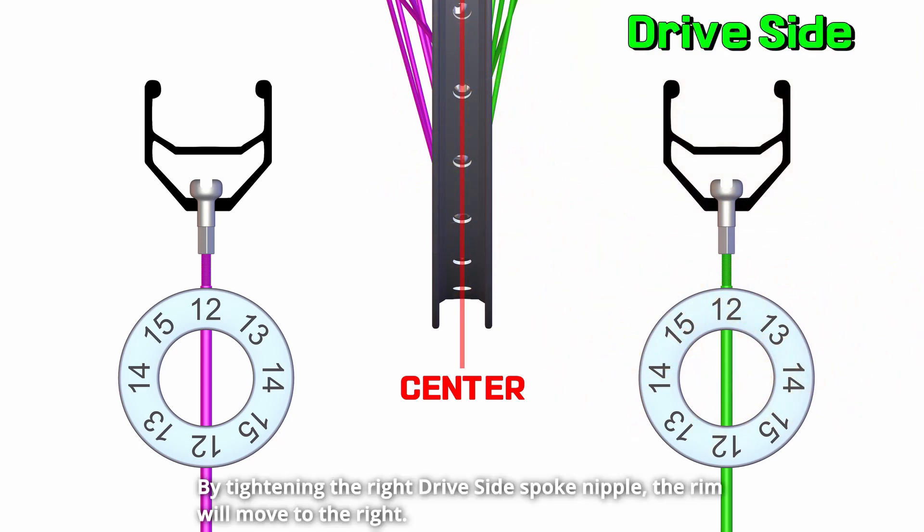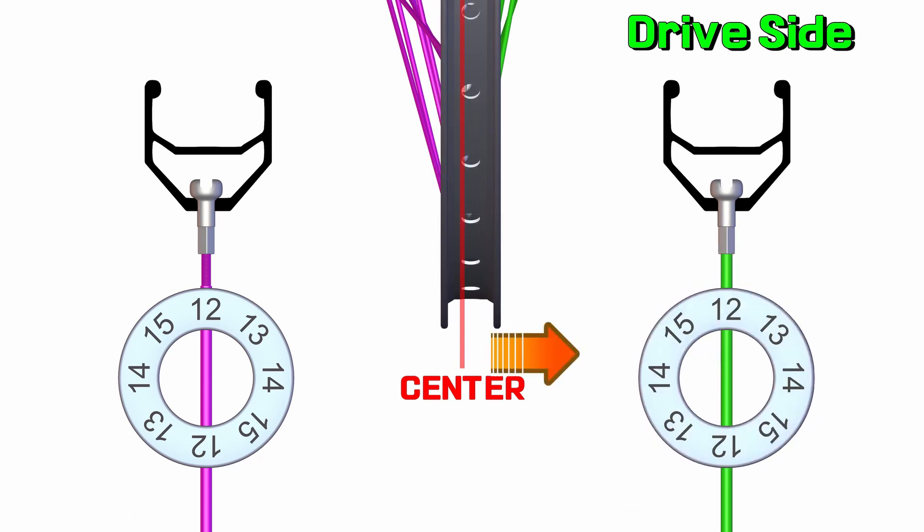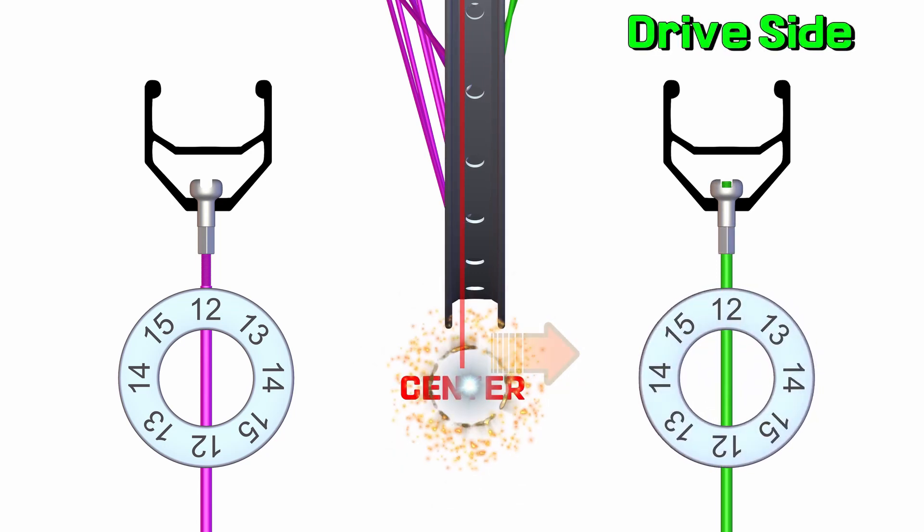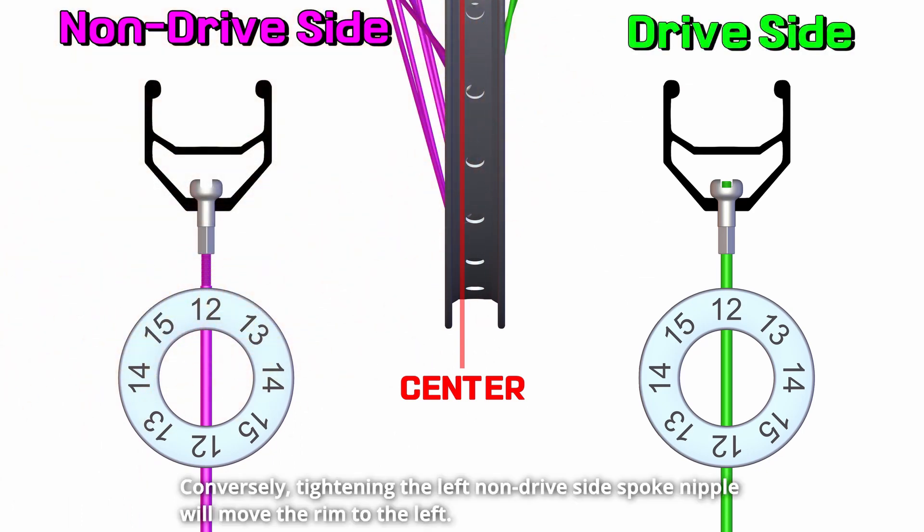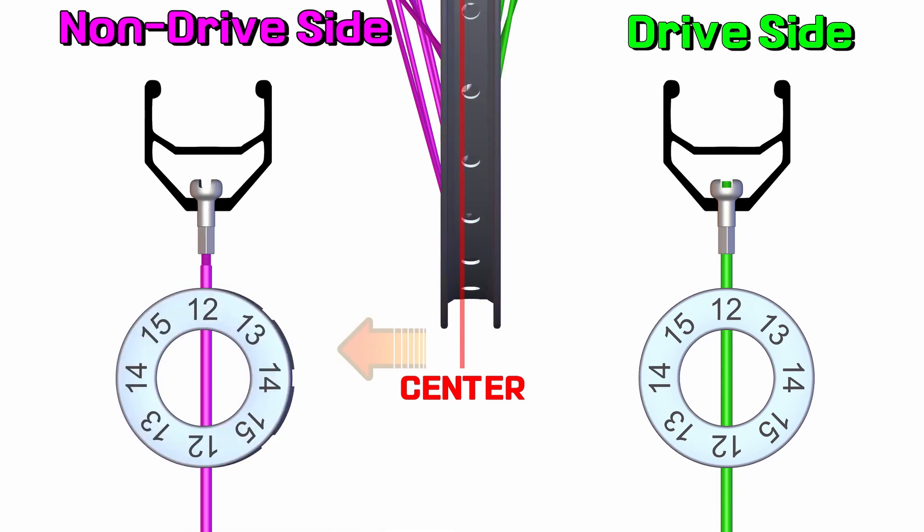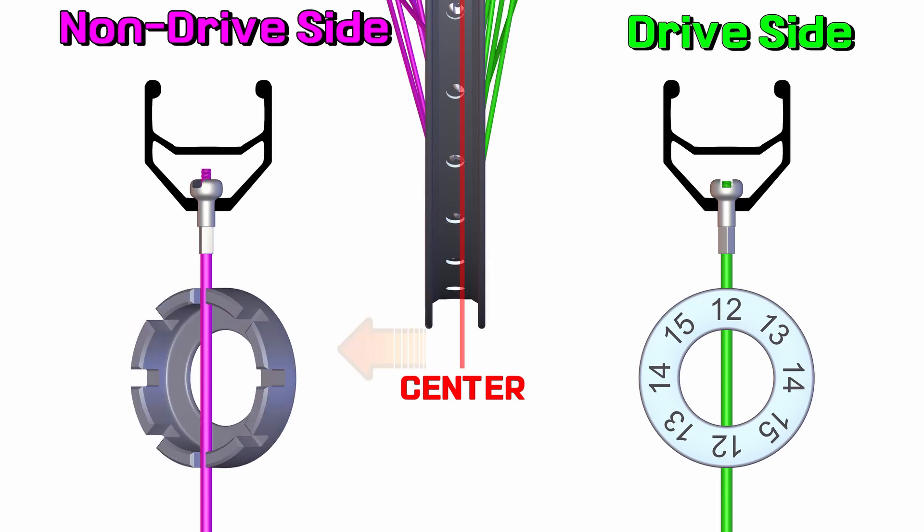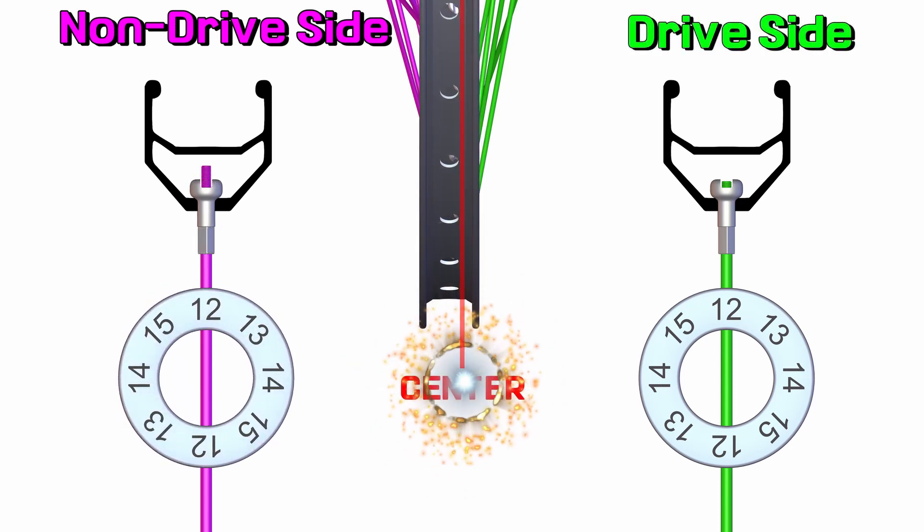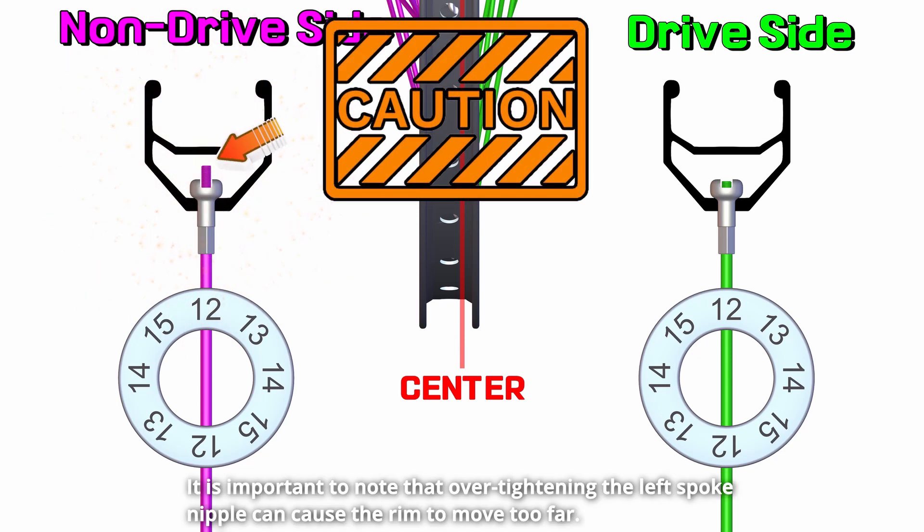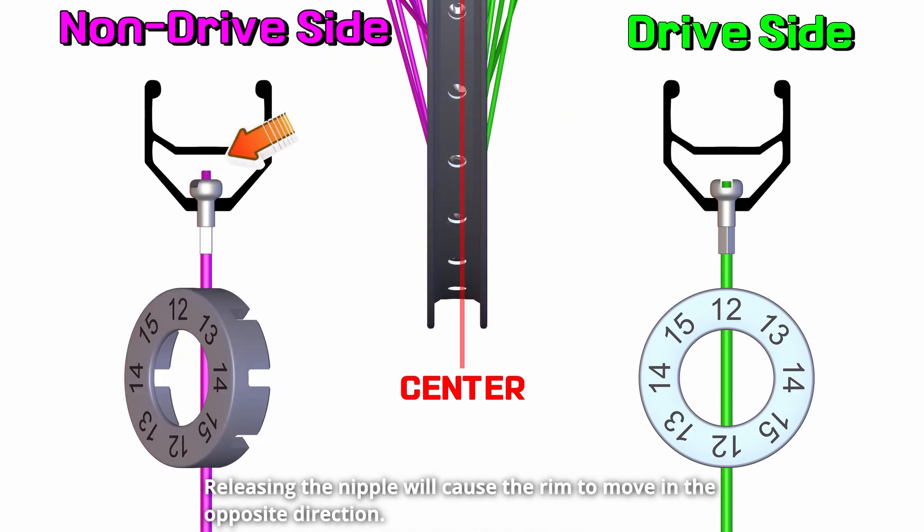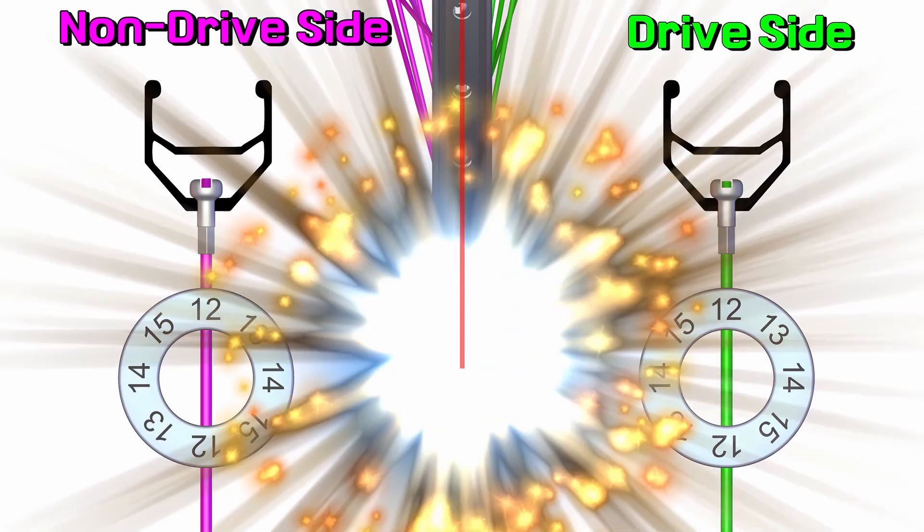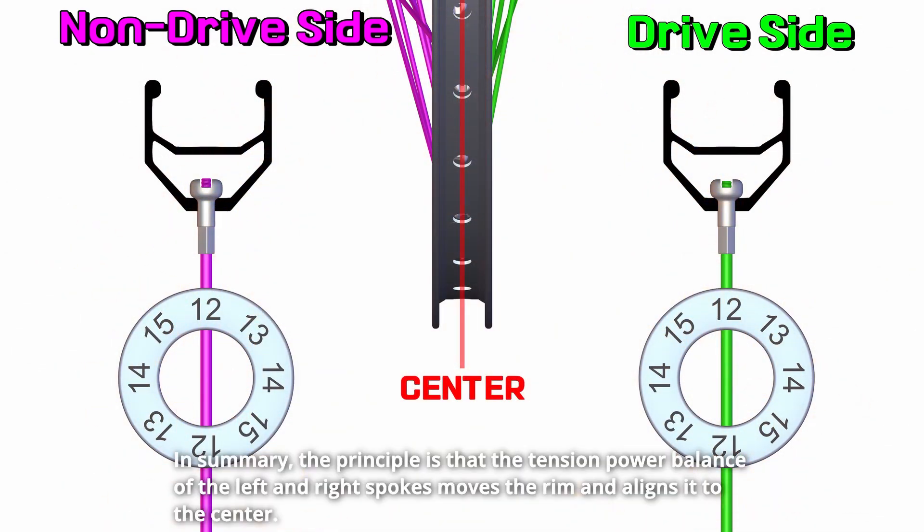By tightening the right drive side spoke nipple, the rim will move to the right. Conversely, tightening the left non-drive side spoke nipple will move the rim to the left. It is important to note that over tightening the left spoke nipple can cause the rim to move too far. In summary, the principle is that the tension power balance of the left and right spokes moves the rim and aligns it to the center.